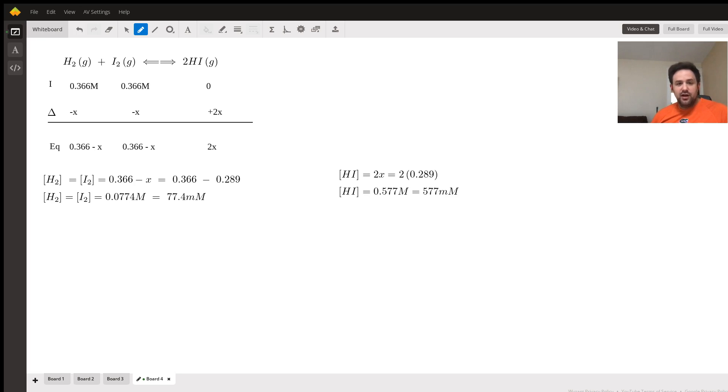For the case of the hydroiodic acid, we just multiply 2x and we find that it's 577 millimolar at equilibrium. I hope that you found this helpful, I hope it was clear, and I hope that you can use this going forward.